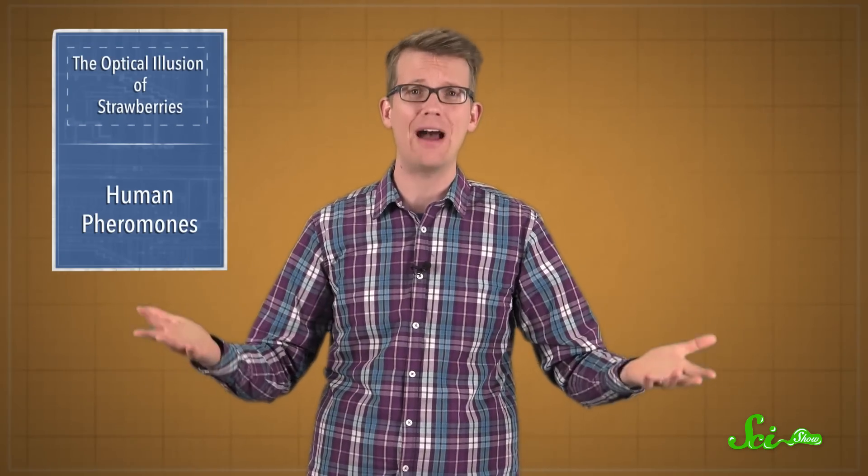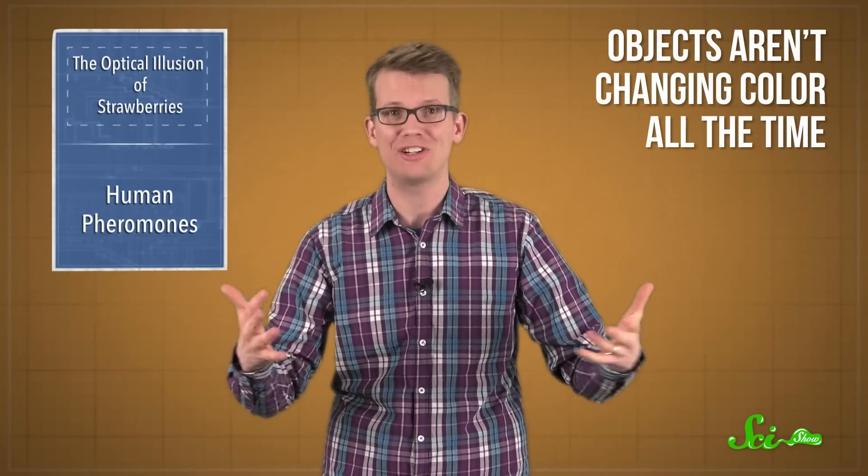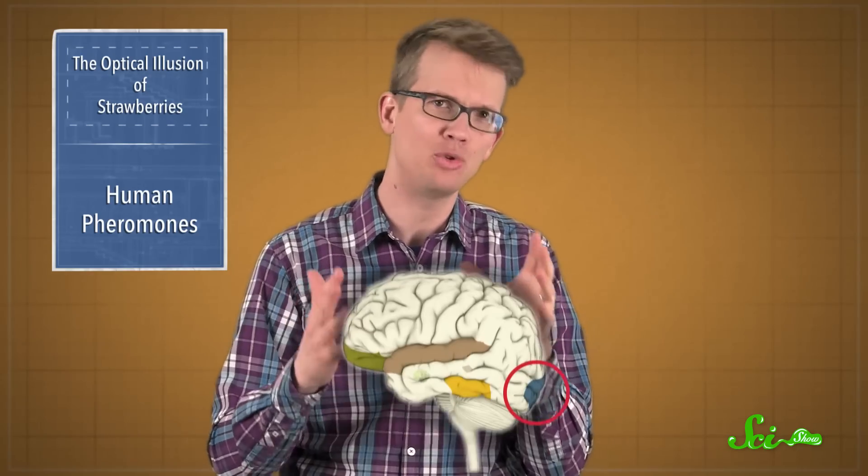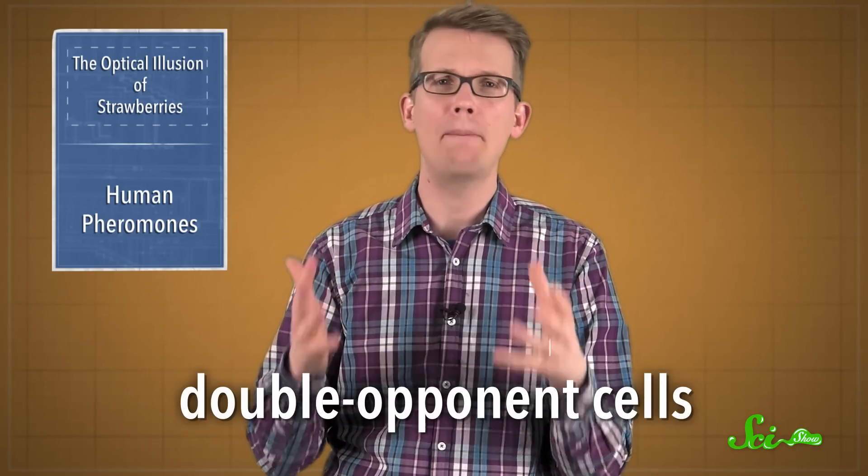And that helps you make sense of reality, because objects aren't changing color all the time. Just the light around them is. Scientists think this color correction process could involve specialized neurons in your primary visual cortex, called double opponent cells,